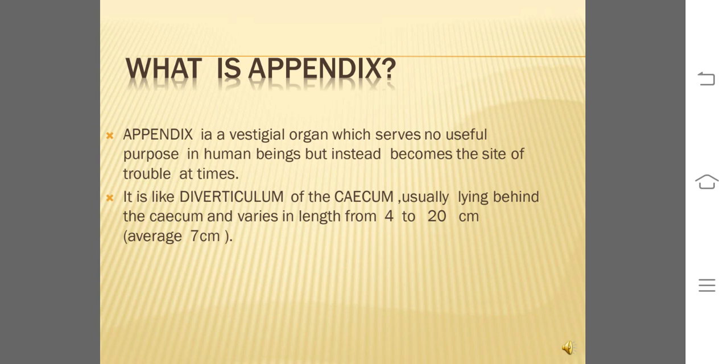Appendix is a vestigial organ which serves no useful purpose in human beings, but instead becomes a site of trouble at times. It is like a diverticulum of the cecum, usually lying behind the cecum, and varies in length from 4 to 20 cm, with an average of 7 cm long.